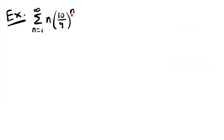Here's our second example: the sum from n equals 1 to infinity of n times 10 ninths to the power of n. This looks similar to a geometric series, but it is not geometric because of the n being multiplied by the exponential part. So we cannot use the geometric series test, and instead we'll use the ratio test.